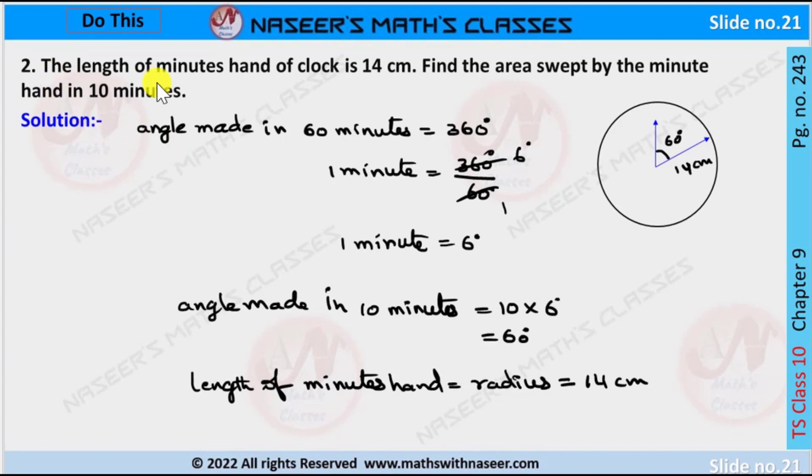Second problem: The length of minute hand of clock is 14 centimeters. Find the area swept by the minute hand in 10 minutes.